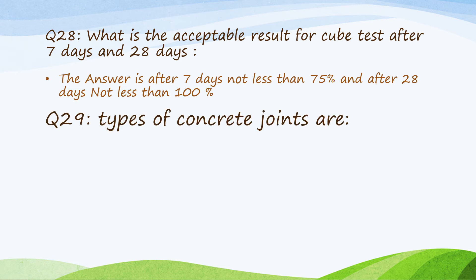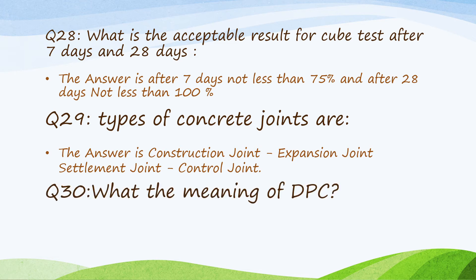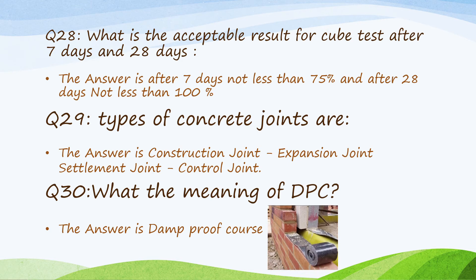Question 29: types of concrete joints are construction joint, expansion joint, settlement joint, and control joint. Question 30: what's the meaning of DPC? Damp proof course, used in masonry works.